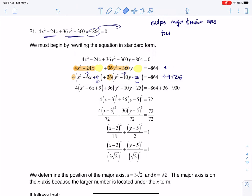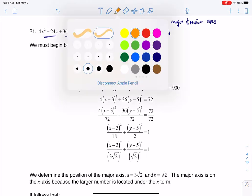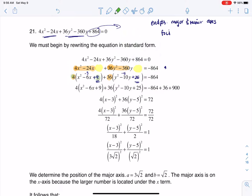But the thing that you have to remember when you're completing the square is you weren't really adding 9 and 25—you were really adding 9 times 4, which is 36, and 25 times 36, which is 900. That's why you see me adding 36 and 900 to the other side of the equation to balance it out.